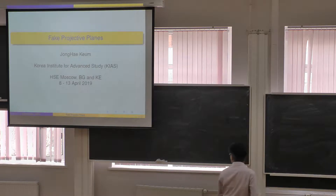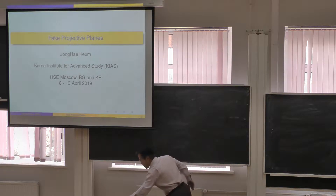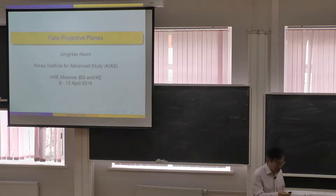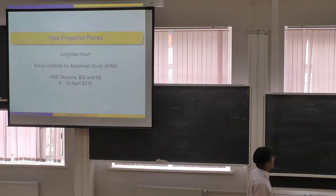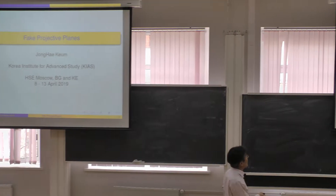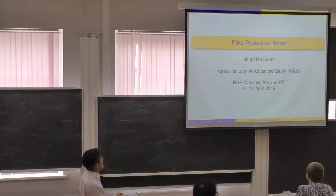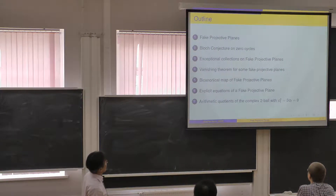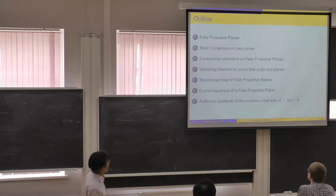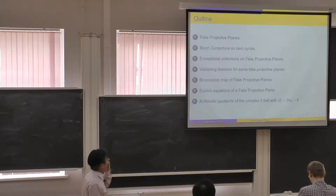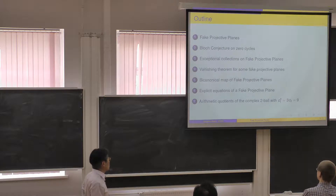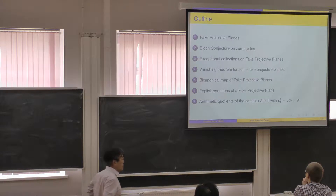My talk will digress a little from the theme of this conference on rational geometry and Kähler-Einstein metrics, but sometimes you enjoy a digression. My title is 'Fake Projective Planes' and I will report recent progress on this subject. The outline of my talk covers: the Bloch conjecture, exceptional collections and vanishing theorems, the bicanonical map, explicit equations, and arithmetic quotients of the complex two-ball with minimum possible Chern numbers.